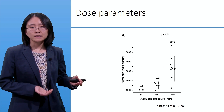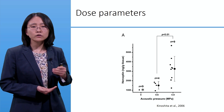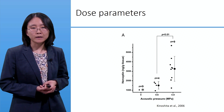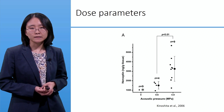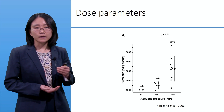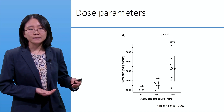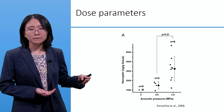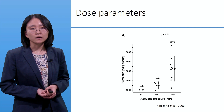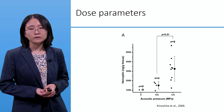A study done in animals demonstrates an increased level of Herceptin or Trastuzumab, which is a monoclonal antibody to the HER2 receptor, with increasing acoustic pressure. At 0.6 to 0.8 MPa, there is a significant increase in Trastuzumab concentration at the target tissue.